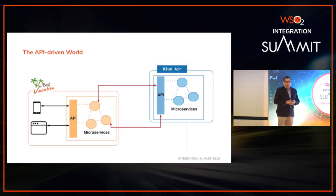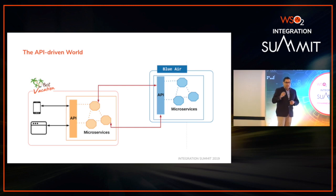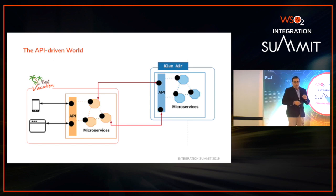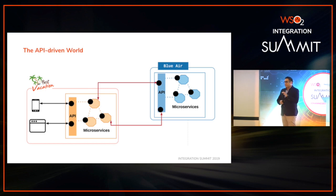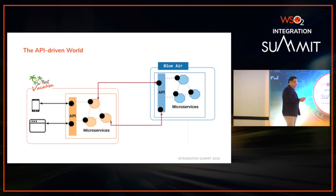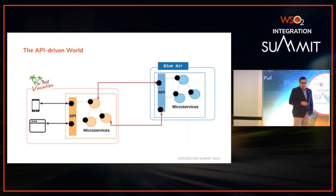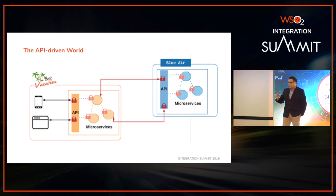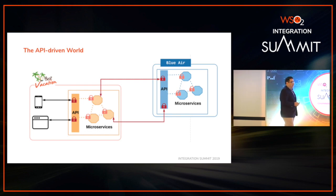These interactions are all happening through APIs. The key thing to remember is that these are the points of information exchange. If you're thinking about security, these are the points you have to be careful about, because this is where information can get leaked or go into the wrong hands, potentially causing huge security breaches. You have to have some way of securing these integration points, and that's where API security comes into play.